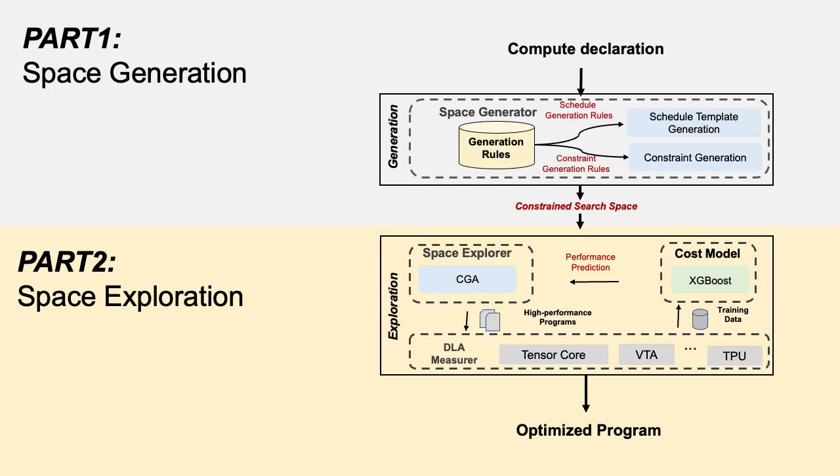Next, I am going to introduce the system overview of Heron. Heron includes two parts. The first part performs static analysis to generate the search space, which is a constraint satisfaction problem. The second part performs exploration in the generated search space with our proposed search algorithm.